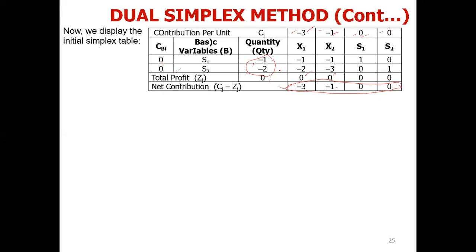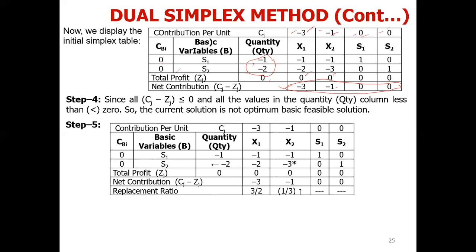So the solution is optimum but not feasible. We have to make it feasible — make the right-hand side values positive. First, we decide the leaving variable: we will leave the variable whose quantity is most negative. Minus 2 is more negative than minus 1, so S2 will be the leaving variable.